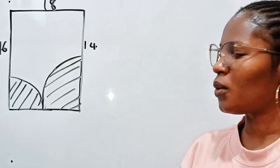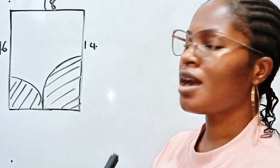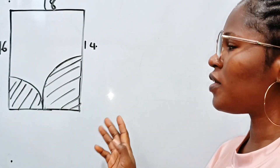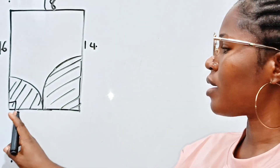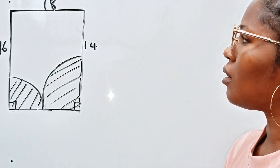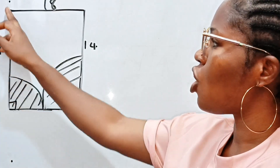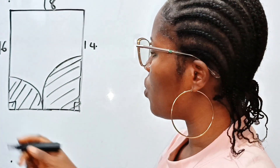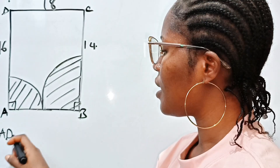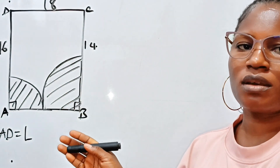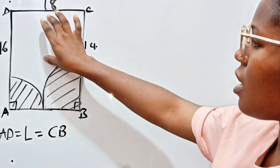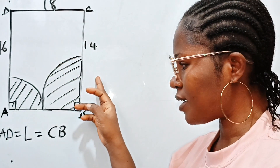This is a quarter circle and this is also a quarter circle. This is not drawn to scale. This is a rectangle, so this is a right angle and this is also a right angle. Let us call this rectangle ABCD, so AD is equal to L, which stands for the length of the rectangle. That means CB is also equal to L, because opposite sides of a rectangle are equal.